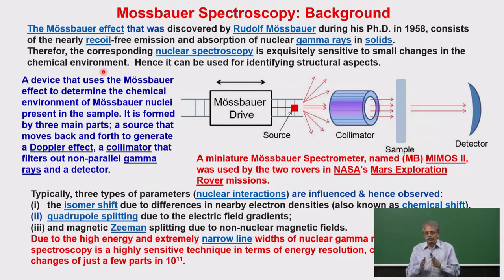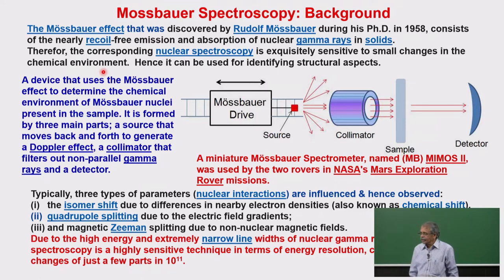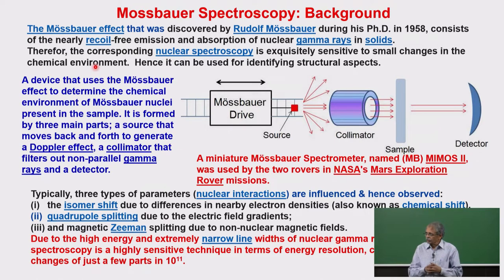The spectroscopy we are talking about is a gamma ray spectroscopy or nuclear transition spectroscopy. This nuclear gamma ray spectroscopy is very sensitive to the electron densities present in the neighboring environment. It is also sensitive to other parameters such as symmetry, coordination, oxidation state, and more. Therefore, this becomes a very important technique for not only quantification but also structural analysis. Even small changes at the vicinity of the Mössbauer nuclei will show up in the measured parameters, giving us a guideline about electronic structure and structural aspects.